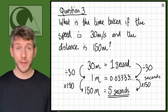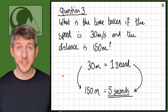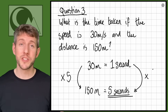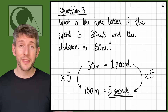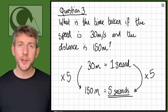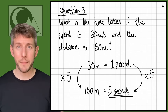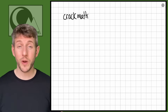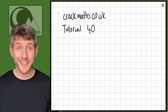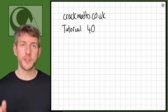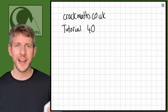The quicker way — some people may have spotted that 30 to 150 is just times 5, so we could go straight from 1 second times 5 to get 5 seconds. Well done if you spotted that. If you want to practice, pause here or go to Crack Maths tutorial 40. Now I'm going to look at some more questions in context, because often with speed-distance-time the difficult thing is doing them in context.